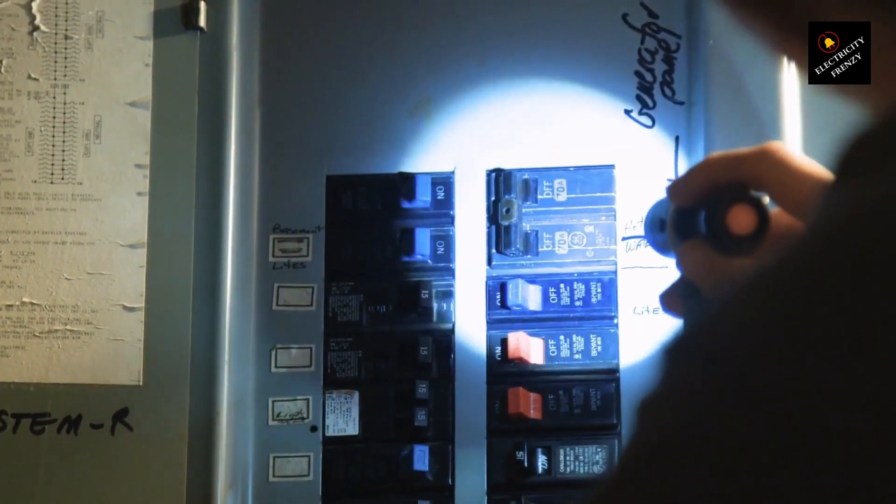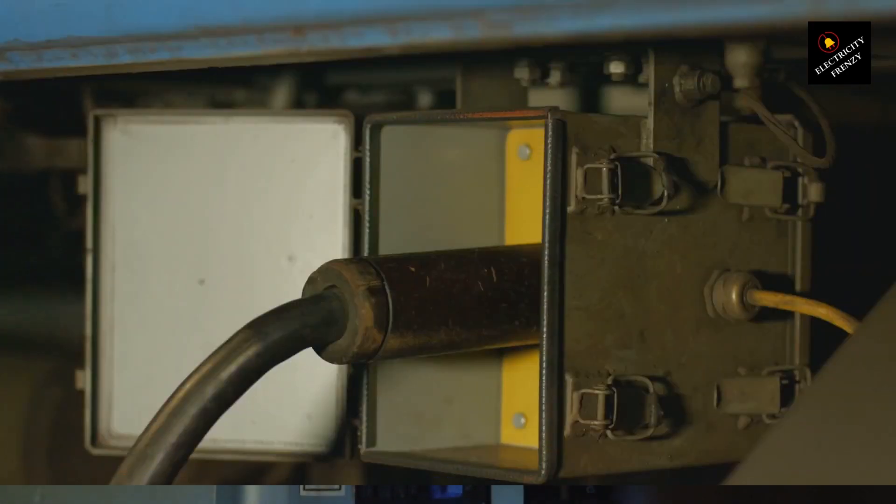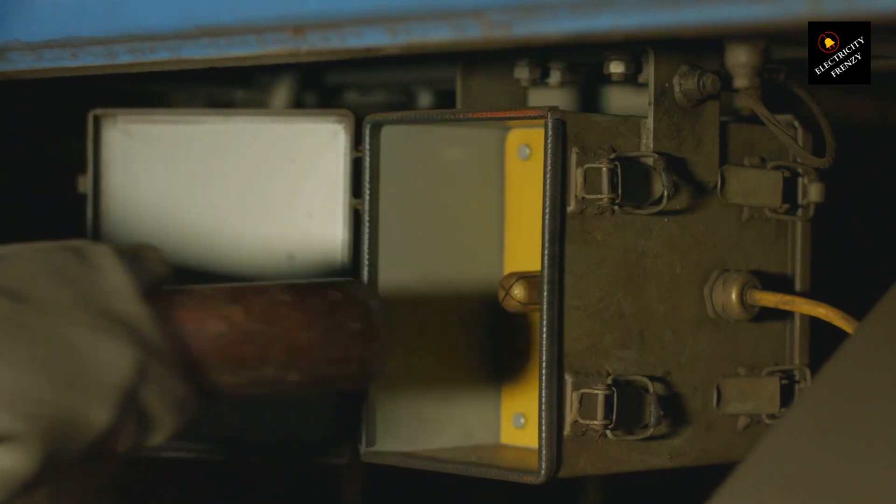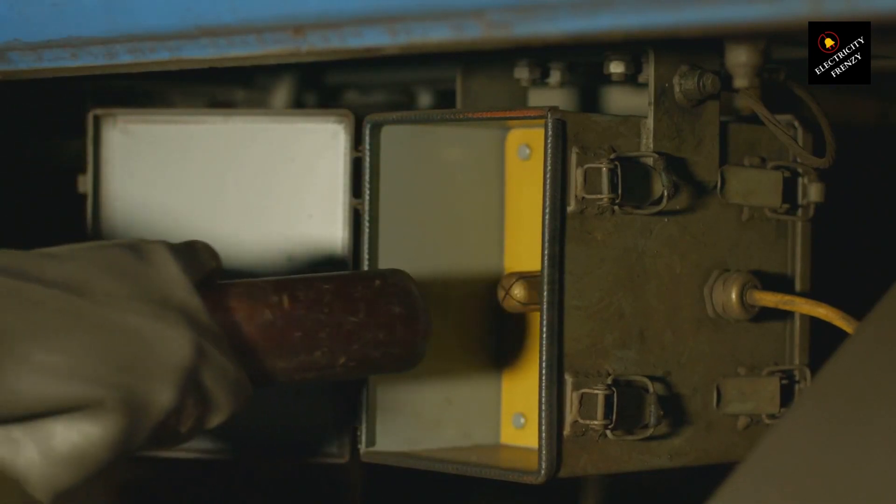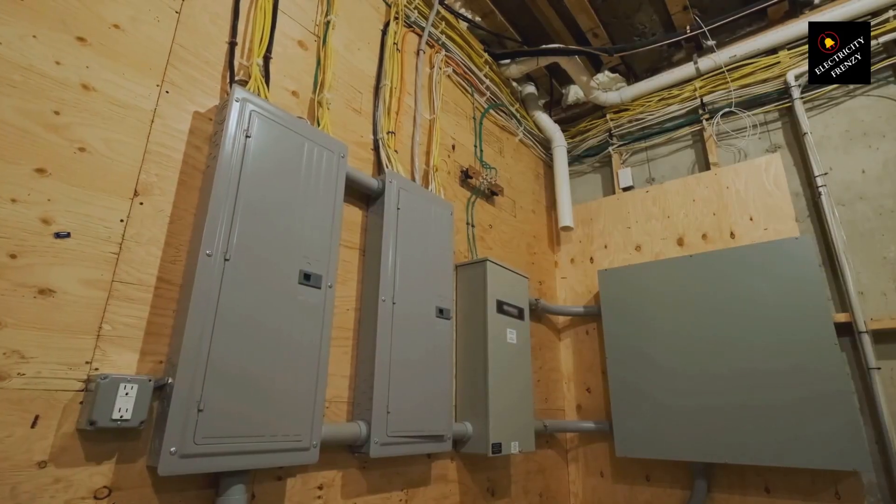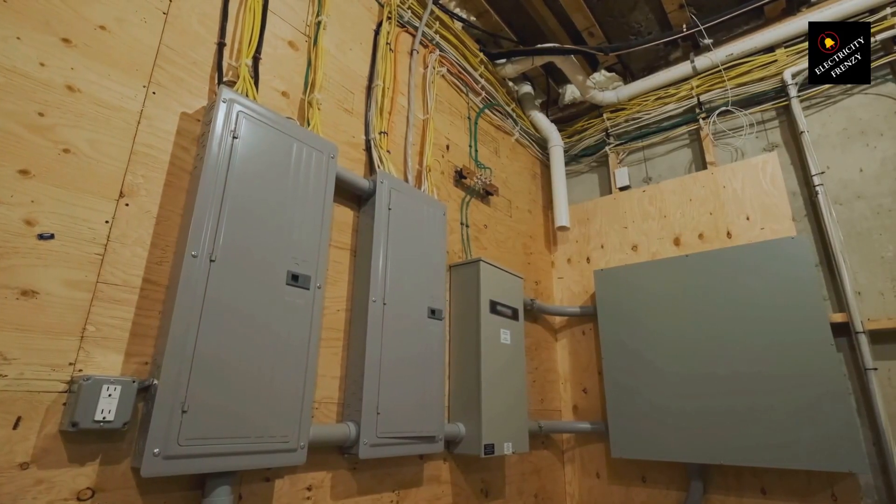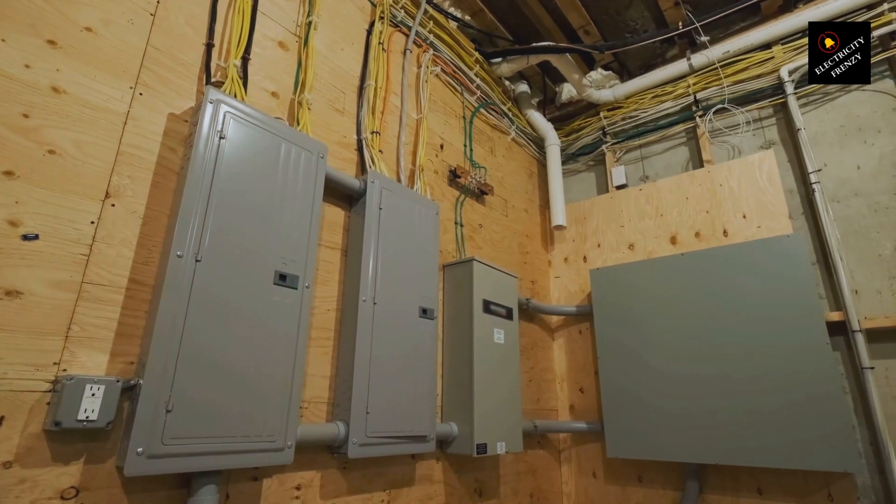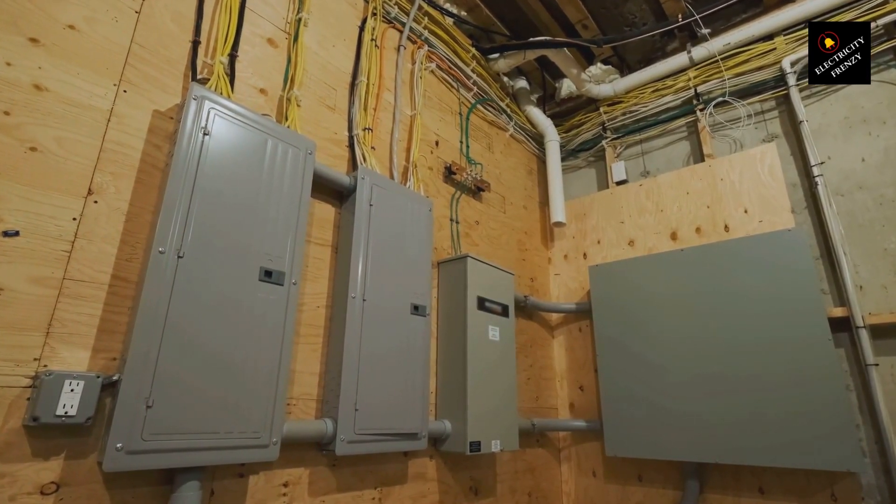Faulty circuit breaker. Over time, circuit breakers can wear out or become defective. They may trip more easily or fail to function correctly. If you have ruled out other potential causes and suspect a faulty circuit breaker, it is advisable to have a qualified electrician examine it. They can evaluate its performance and replace it if necessary.